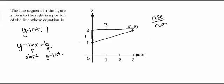So now this tells us that our slope m is just equal to the rise, which is 1 over the run here, which is 3.